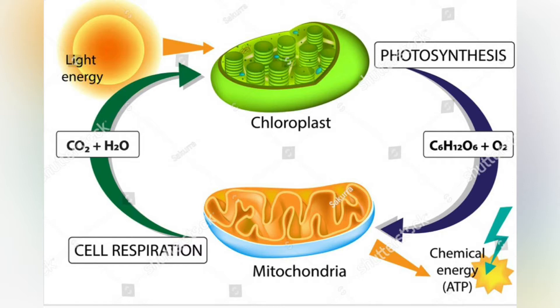The thylakoid membrane is the site of the light-dependent reactions of photosynthesis, with the photosynthetic pigments embedded directly in the membrane. It is an alternating pattern of dark and light bands measuring each one nanometer.